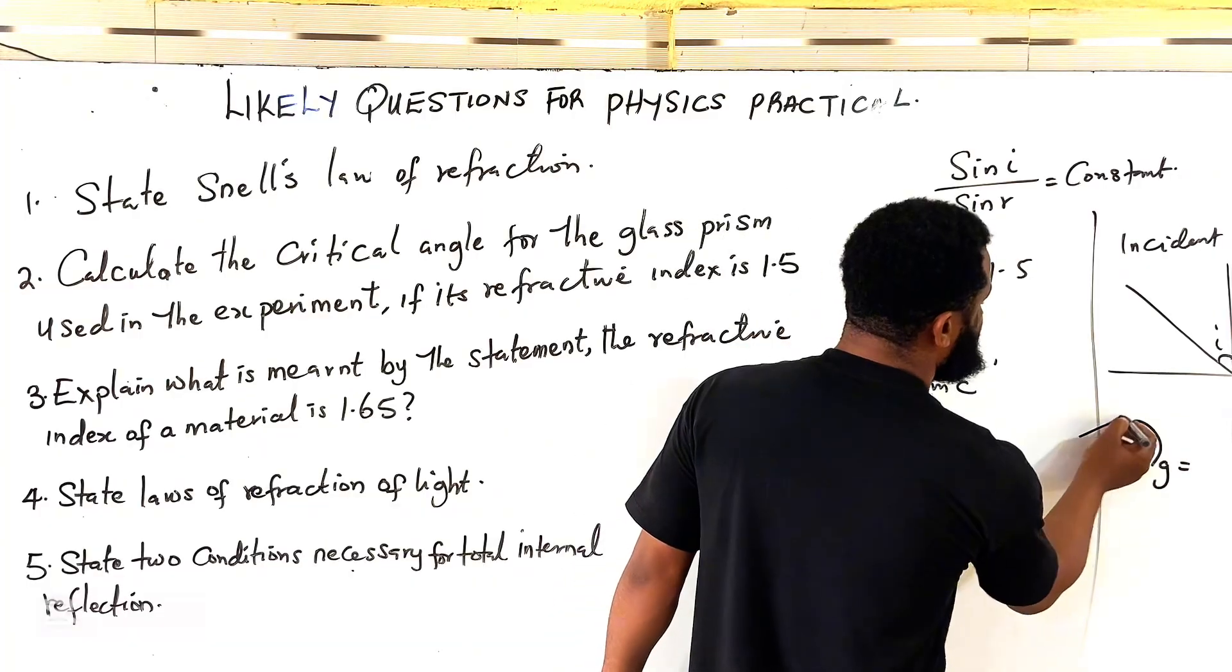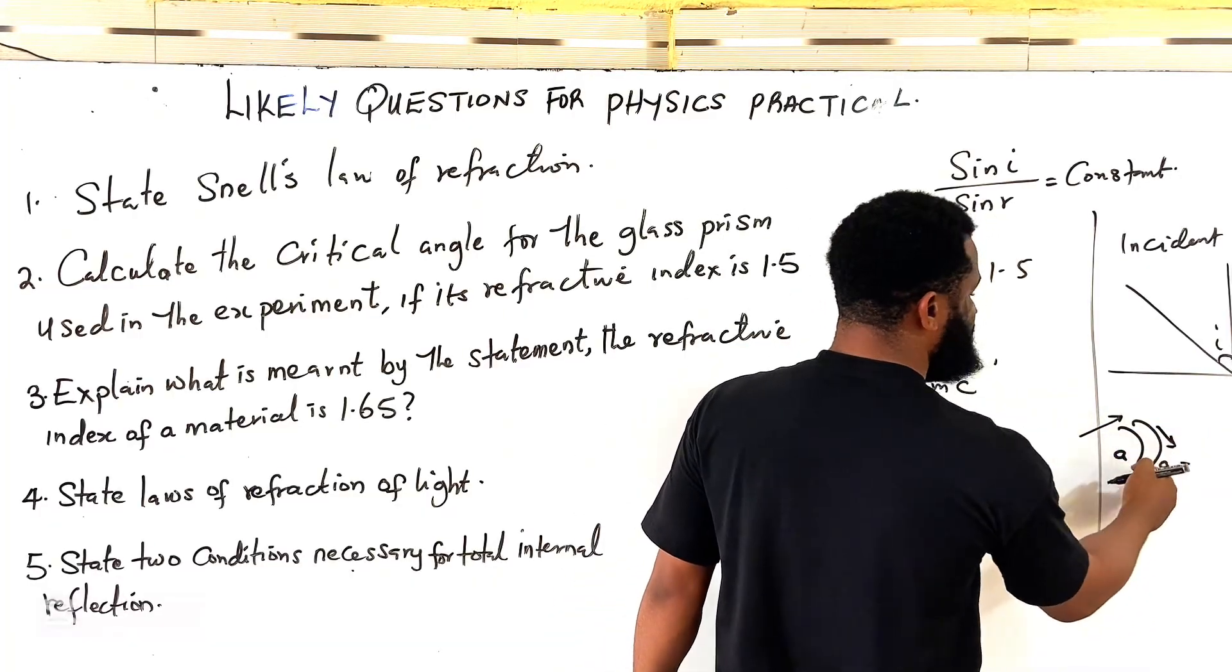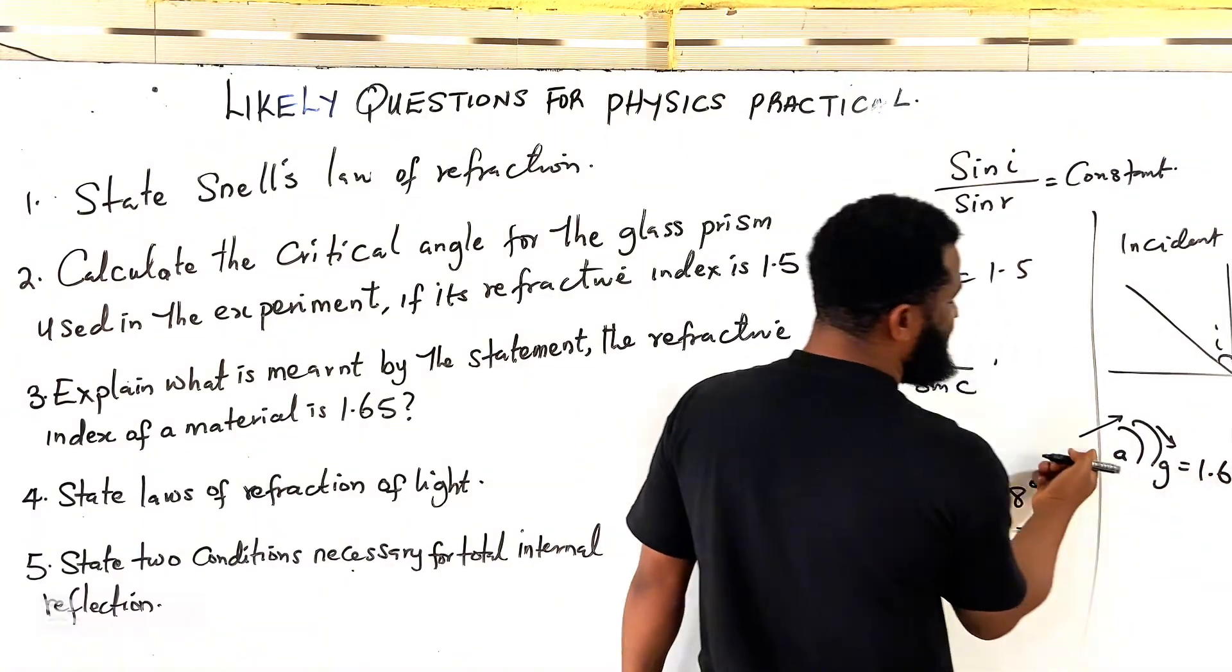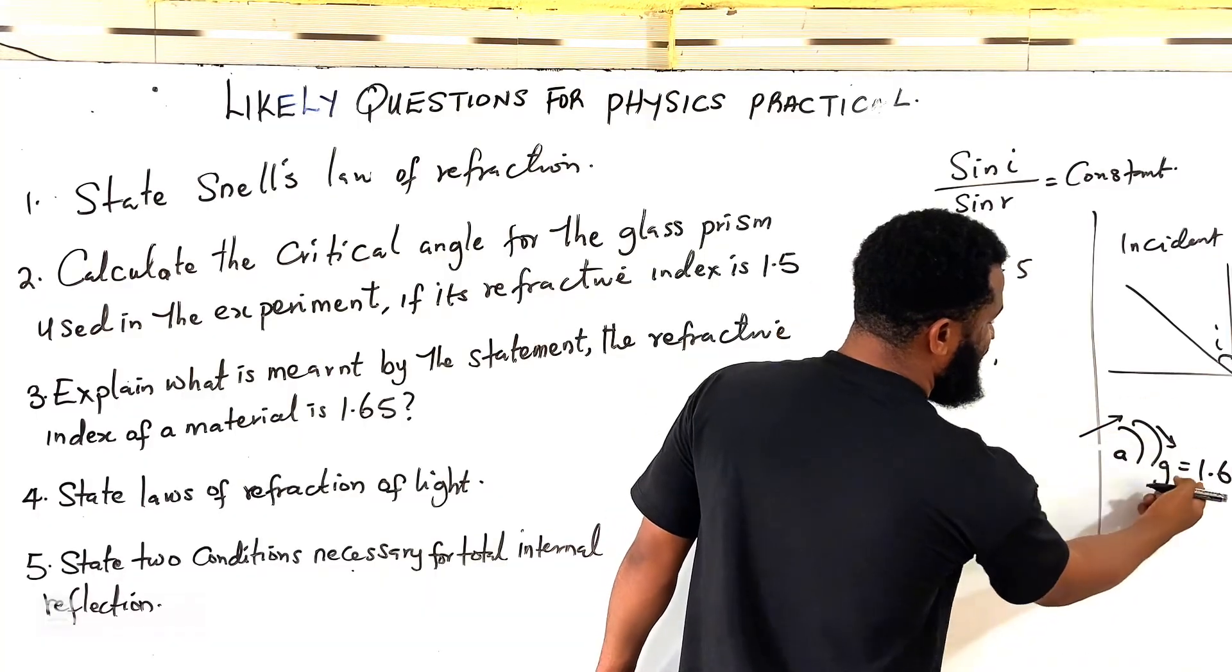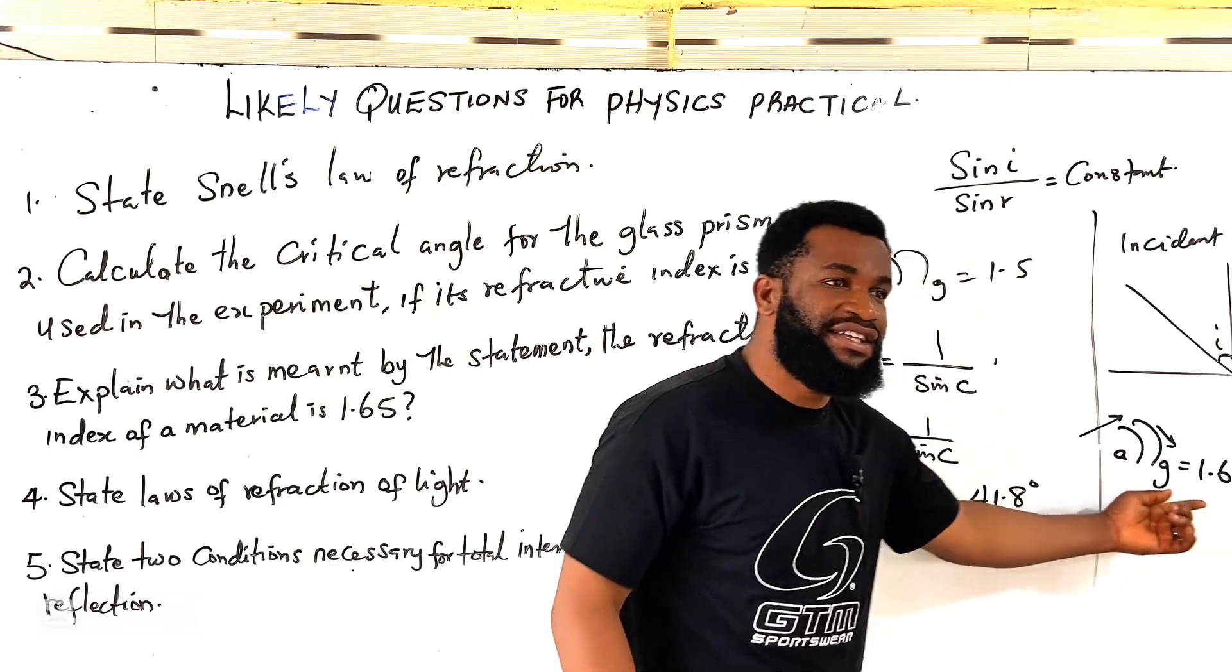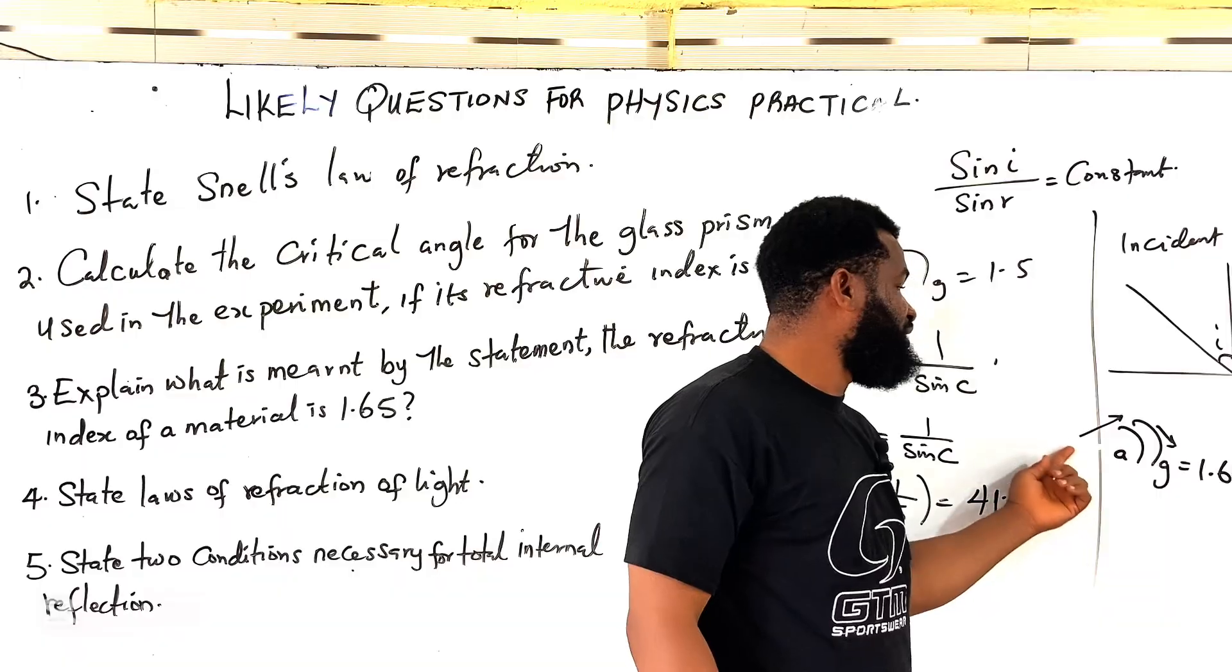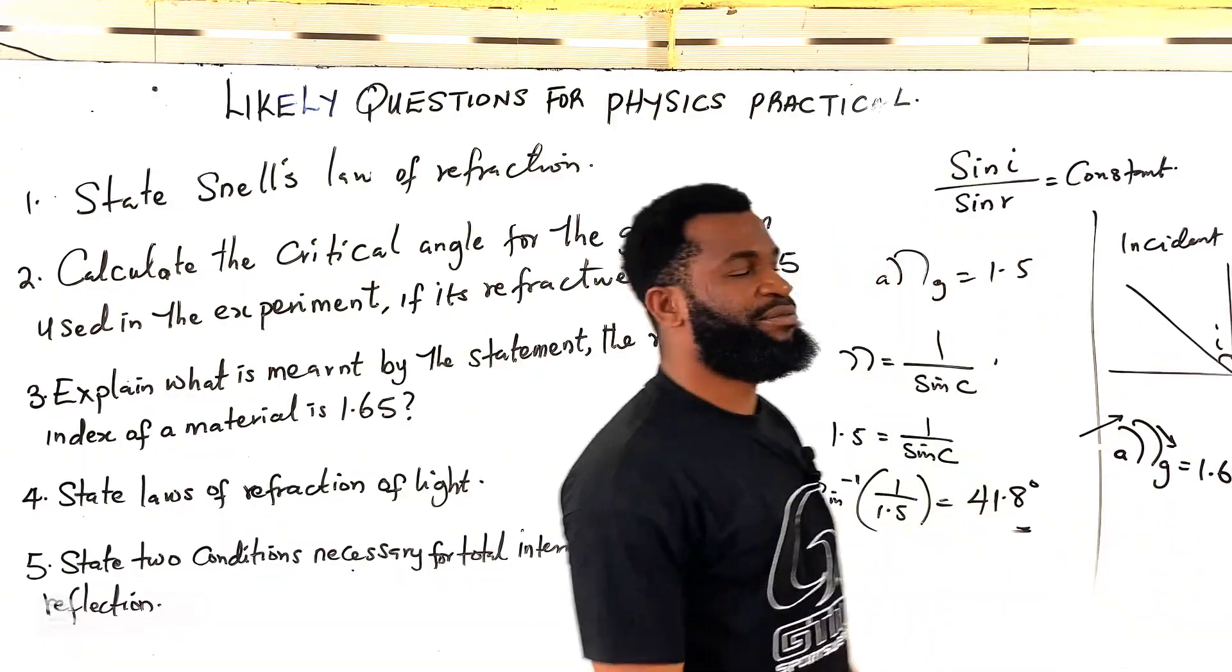It means that if light is coming through air and then enter into this material, if light is passing through air into a given material, it has 1.65. So, this 1.65 is the refractive index of the material when light is passing through air into the material. That is the meaning.